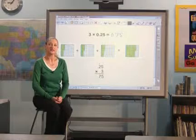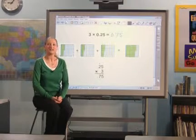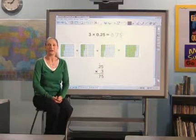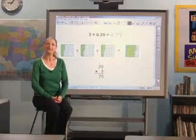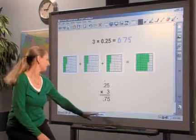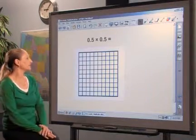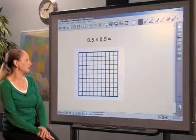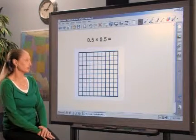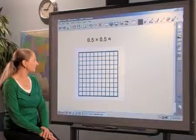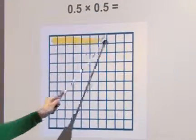Students should also use models and simple examples to develop a similar understanding of decimal by decimal multiplication with decimals less than 1. For example, students can use 10 by 10 grid paper to model problems such as 5 tenths times 5 tenths.